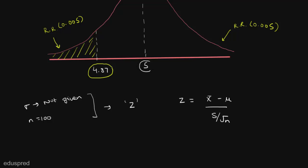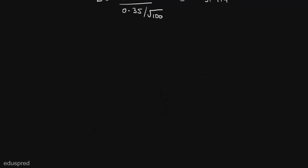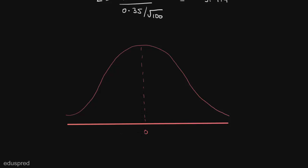Using this formula, let's find the corresponding z-values. The z-value corresponding to x-bar equal to the hypothesized mean of 5 will be 0, since the numerator is 5 minus 5. Now let's find the z-value corresponding to x-bar equal to 4.87: z equals (4.87 minus 5) divided by (0.35 divided by root 100), which gives us minus 3.714. So our problem now boils down to finding the probability of the shaded region to the left of z equals minus 3.714 on the standard normal distribution, then multiplying by 2 for the correct p-value.